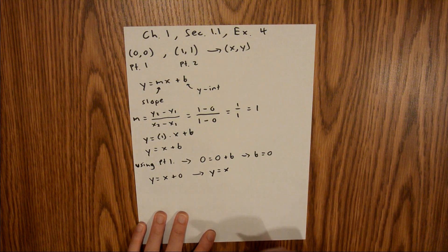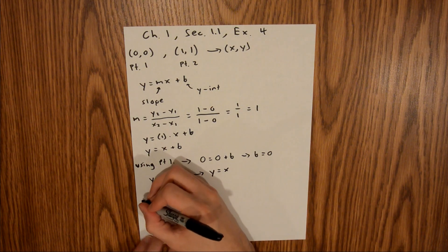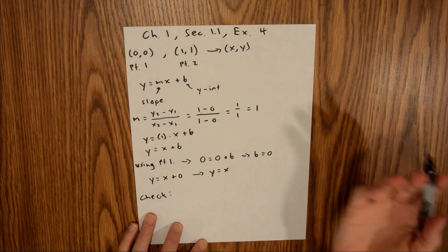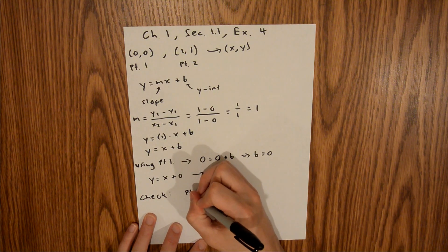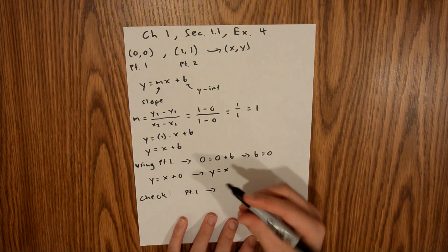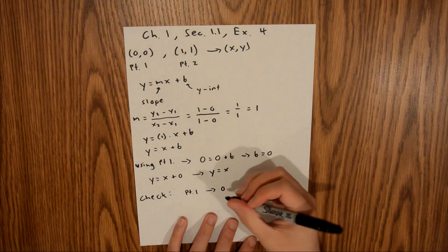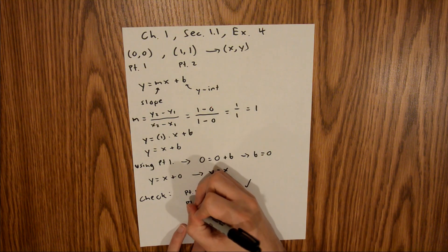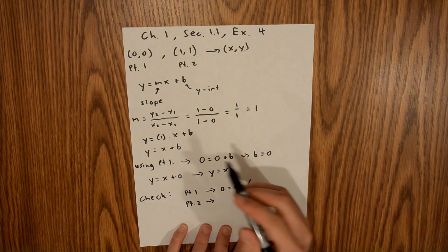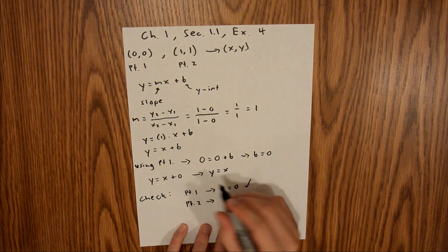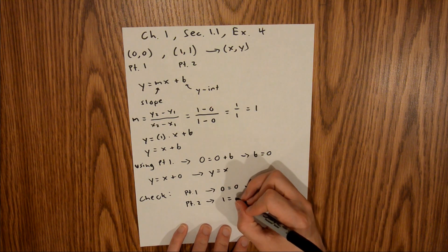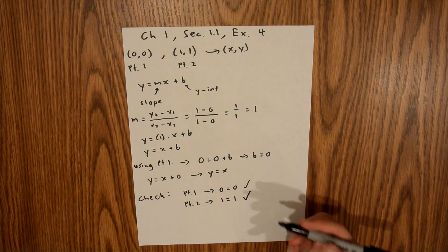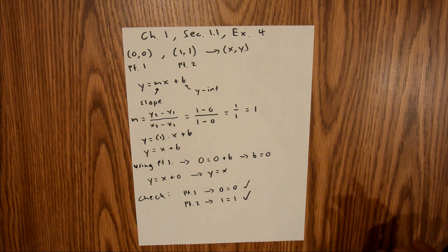We can verify this is correct by plugging in both points. For point 1, y is 0 and x is 0, so 0 equals 0 — true. For point 2, y is 1 and x is 1, so 1 equals 1 — also true. Both points check out, so y equals x is the final answer.